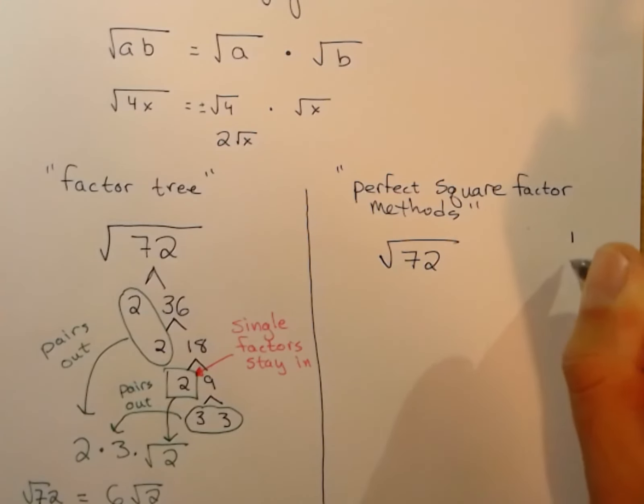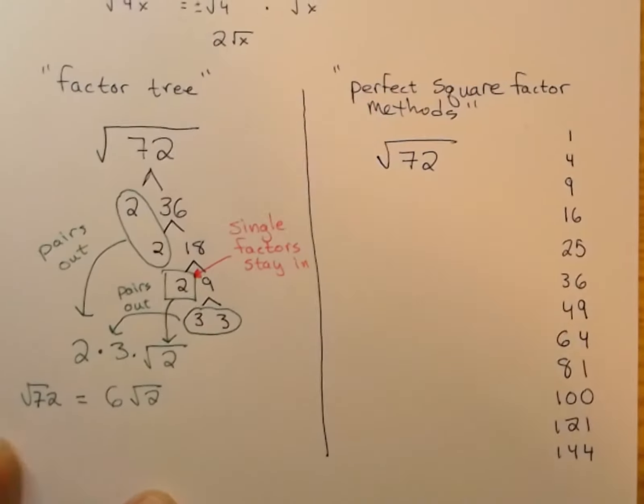A reminder of perfect squares: 1, 4, 9, 16, 25, 36, 49, hopefully you have them all through 144 memorized, 64, so on and so forth, 81, 100, 121, 144. The list does go on and on.